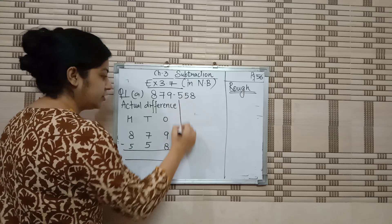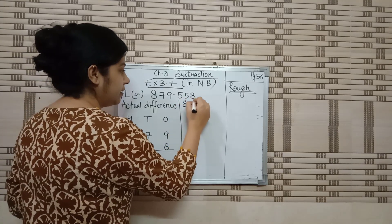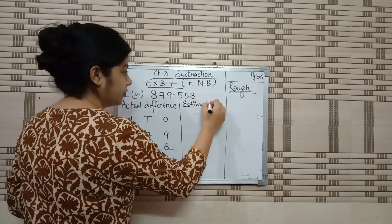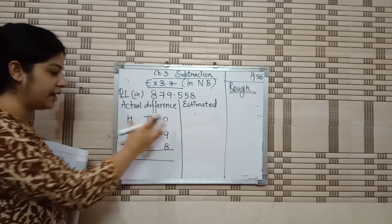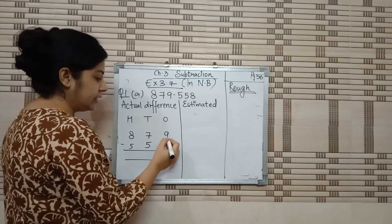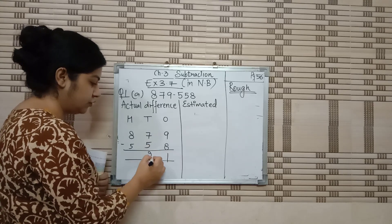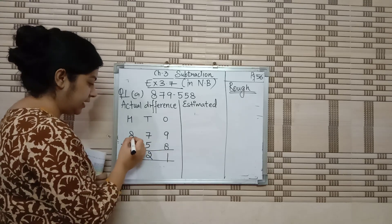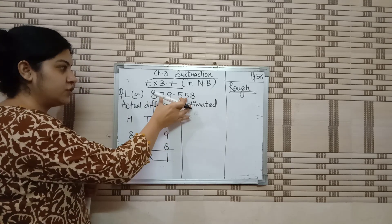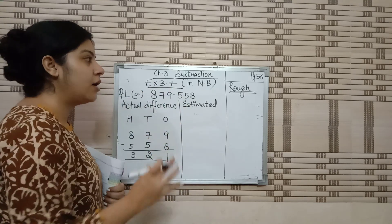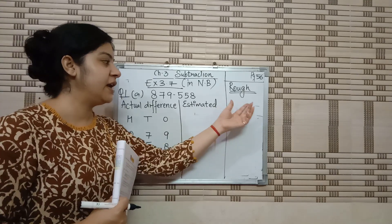Then draw a line, and we have to find the estimated difference. First we find the actual difference using the given numbers. 9 minus 8 is 1, 7 minus 5 is 2, and 8 minus 5 is 3. This is the actual difference from the numbers given in the question.